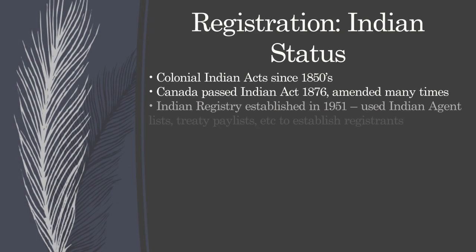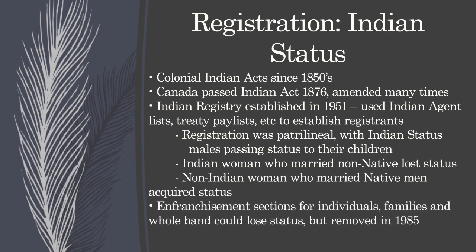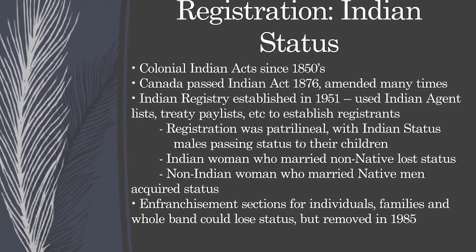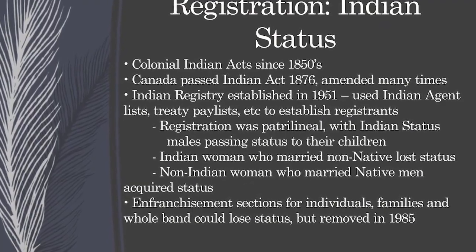Looking at colonial acts since the 1850s: Canada passed the Indian Act in 1876, and it's been amended many times. The Indian registry was established in 1951. The Indian agent at that time would use treaty pay lists to establish the registration list for Kahnawake. Registration was patrilineal — Indian status was passed through the male line. Indian women who married non-Native men lost their status, while non-Indian women who married Native men acquired status, as did their children.